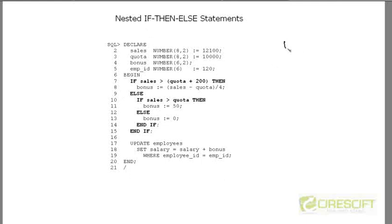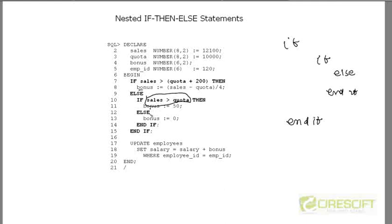The next concept is that inside one IF-END IF block, I can also have another inner IF-END IF, which can also contain its own ELSE. This is an example: if sales is more than one threshold, then bonus is set to that value. Else, if that condition is not true, then I check if sales is more than quota, and if that also is not true, I set bonus to 0. So inside the outer IF-END IF, inside the ELSE block, I have an inner IF-END IF. That is nested IF-THEN-ELSE.